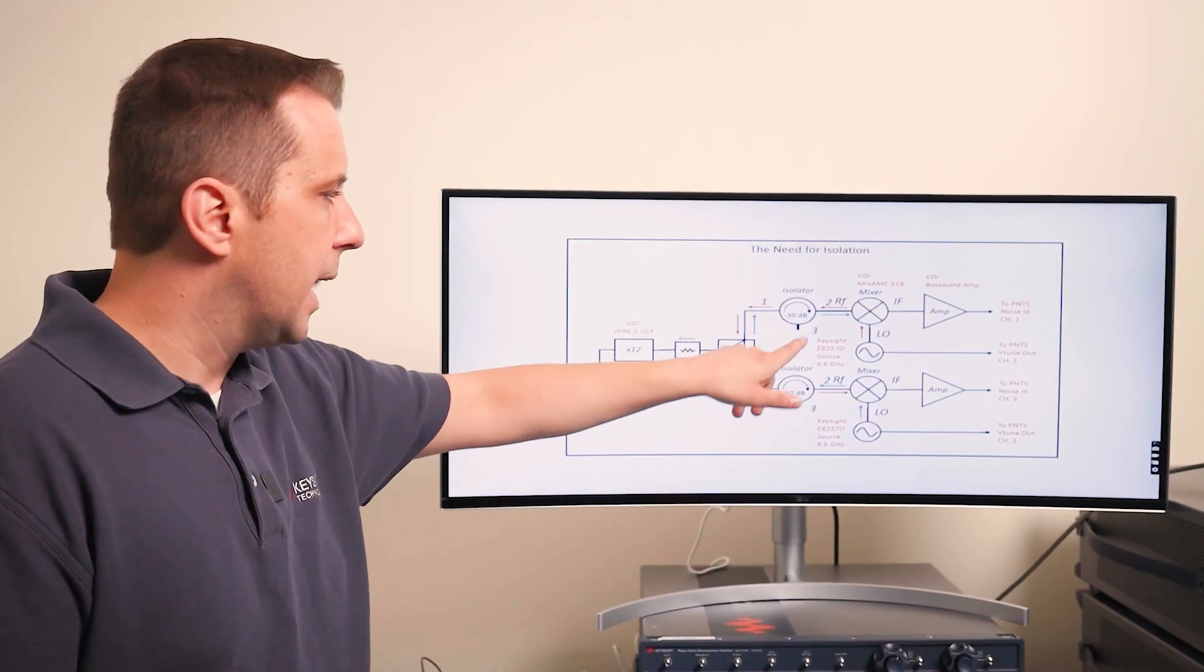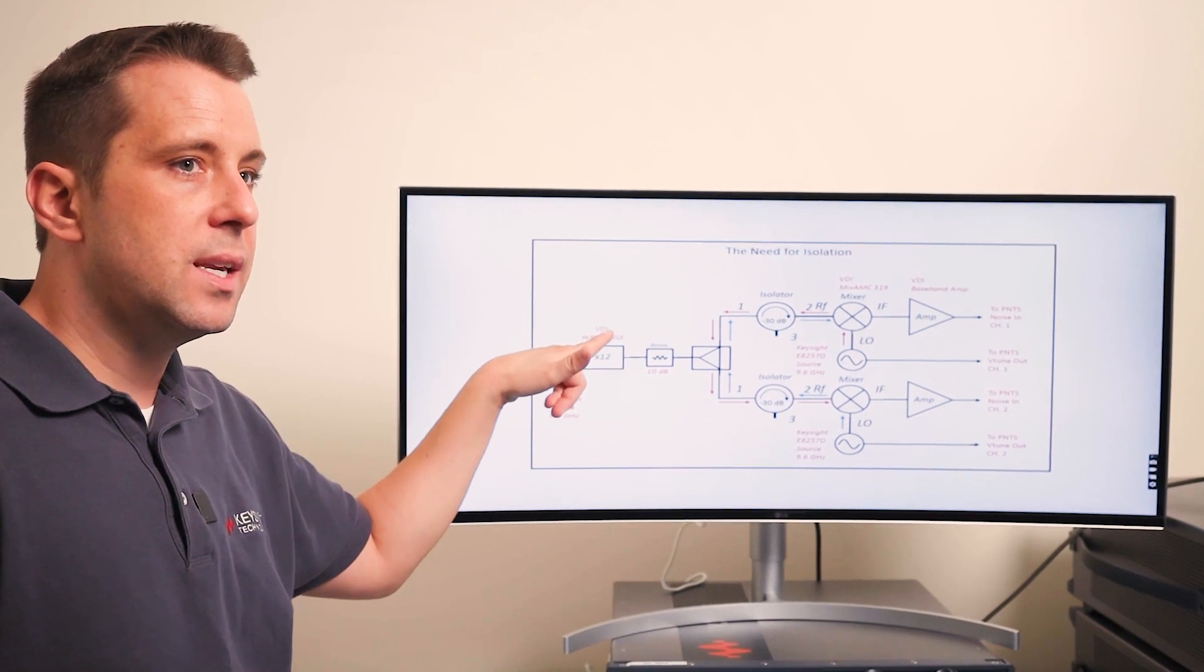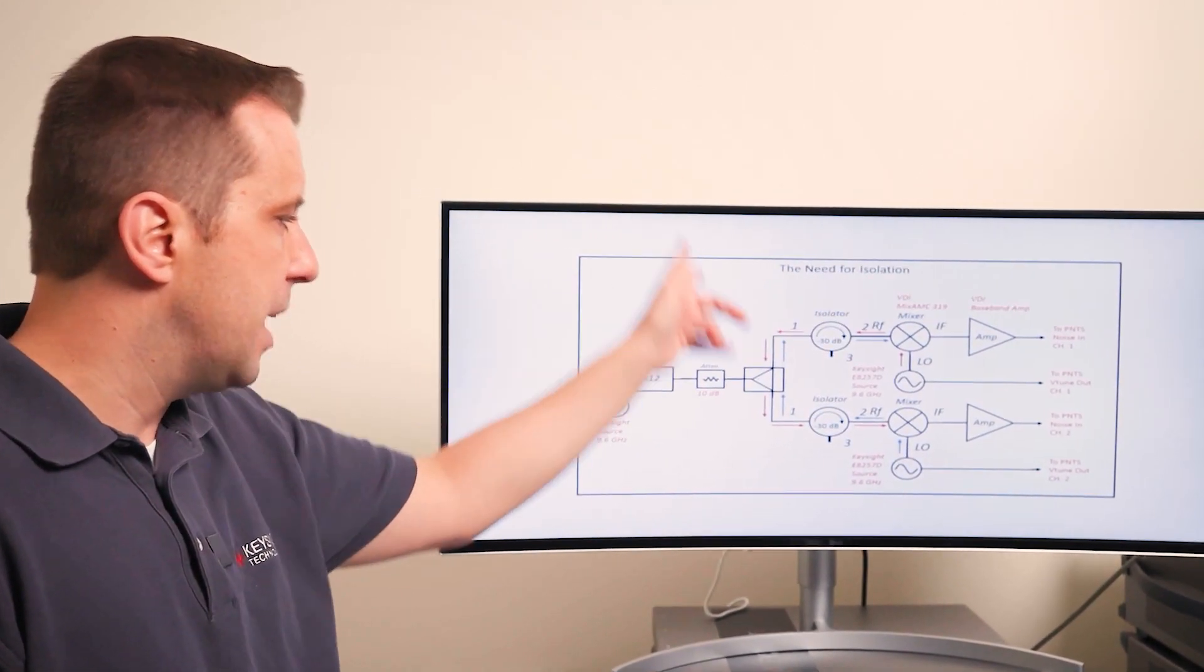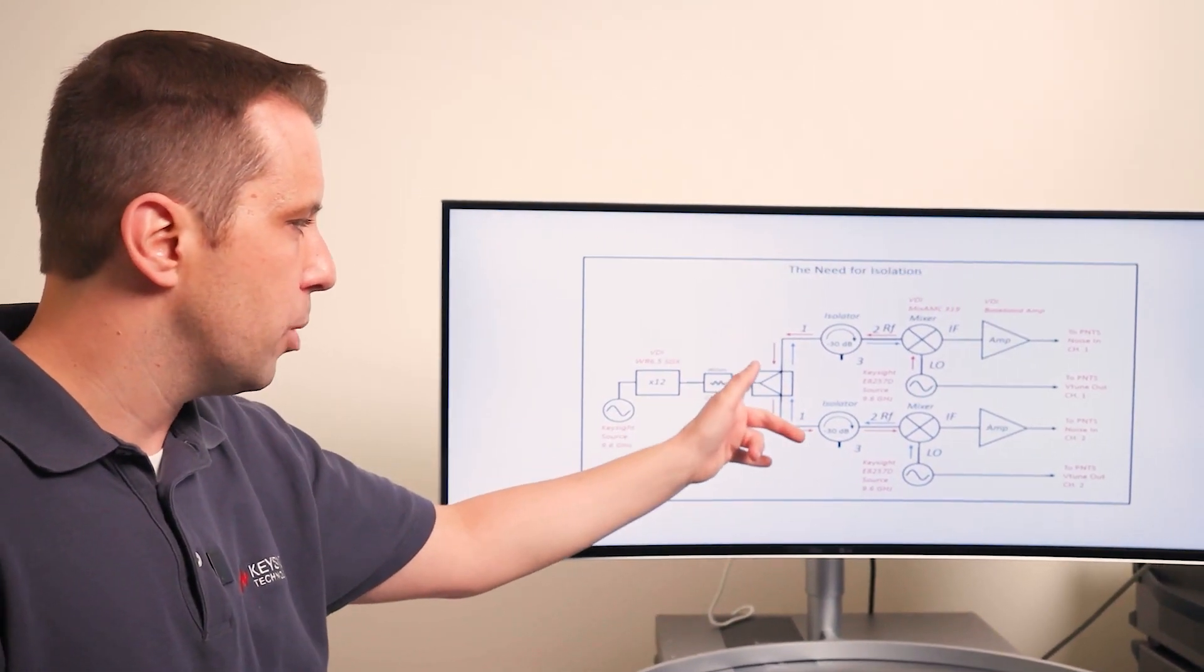Given enough cross-correlations we can actually get to the DUT's actual performance or basically the SNR that's at the input of that splitter.